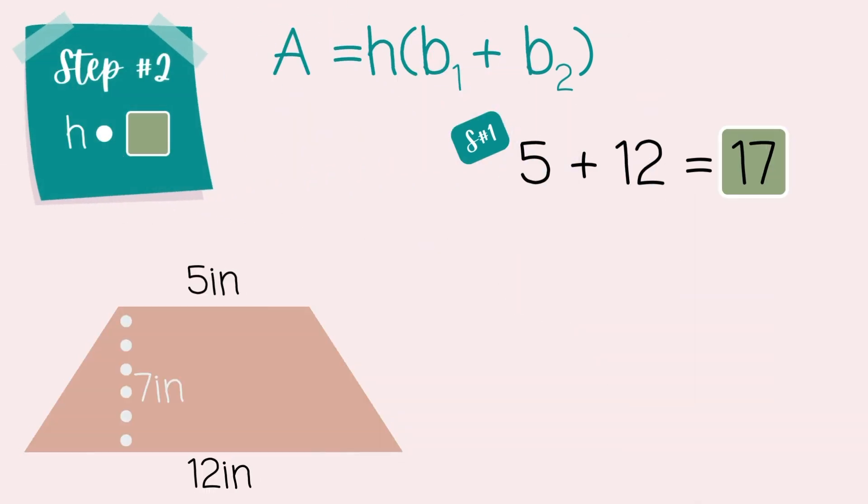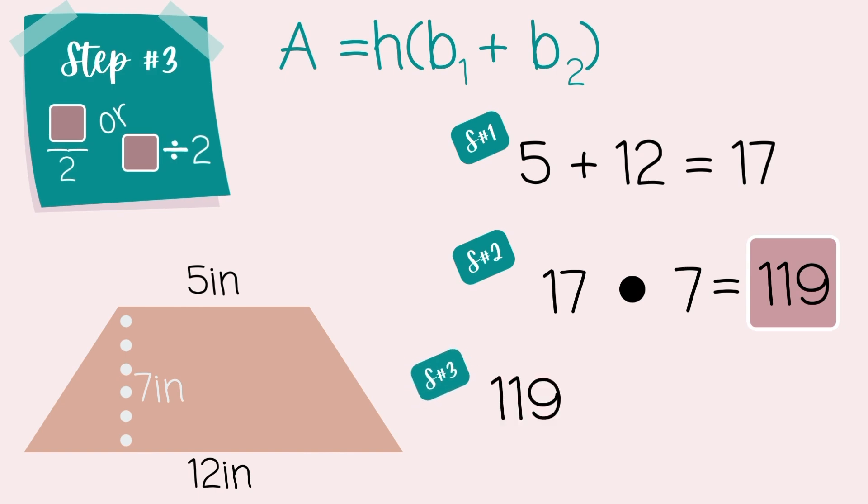Step 2, now we're taking that answer, and we're going to times the height. So, we have 17 times 7. That equals 119. Step 3, we're going to take that answer and divide it by 2, giving us 59.5.